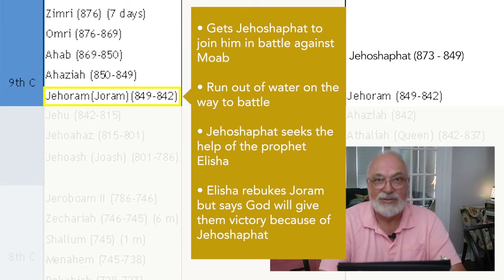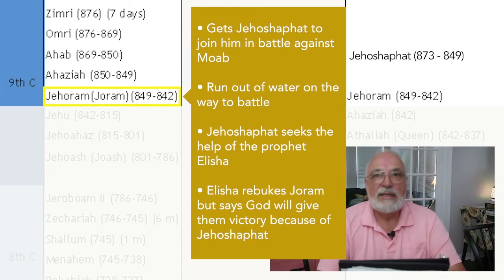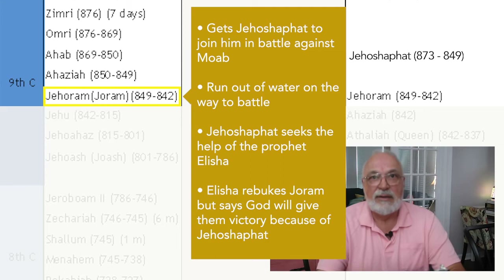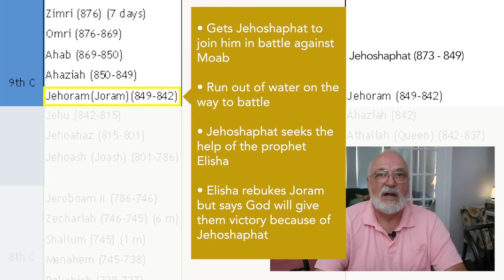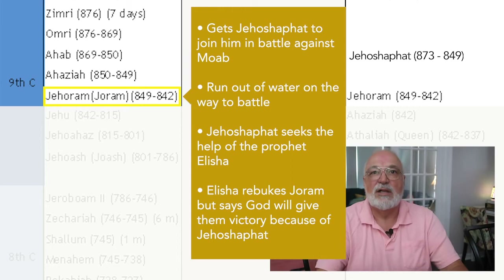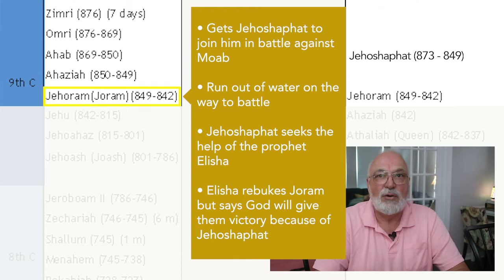Jehoram of Israel gets Jehoshaphat to join him in battle with Moab. On the way to battle they run out of water for themselves and their horses and are about to die. Jehoshaphat wants to seek the prophet Elisha — not Elijah; Elisha has succeeded Elijah as the prophet of God. Elisha rebukes Jehoram, but because of Jehoshaphat, he says God will give the victory, and God does.